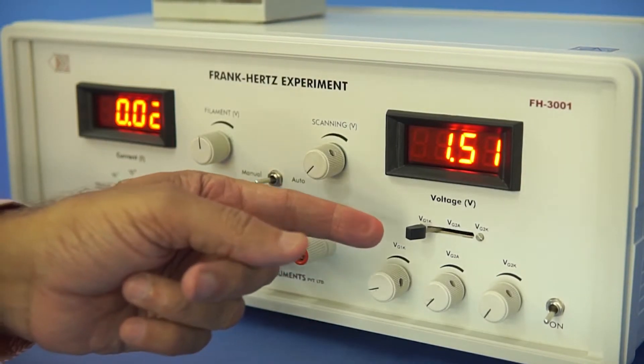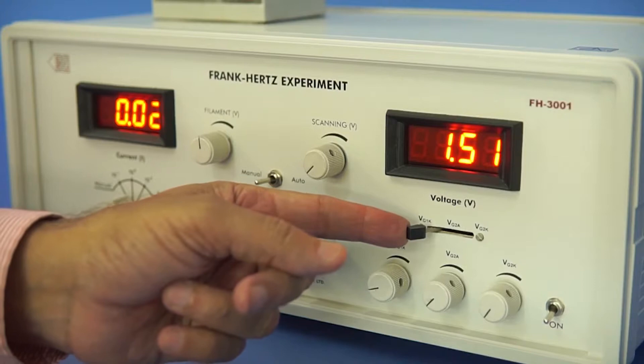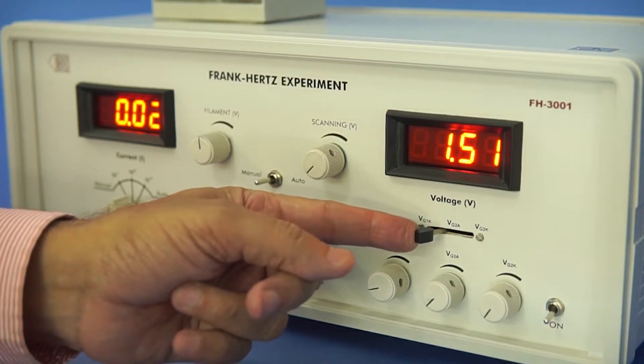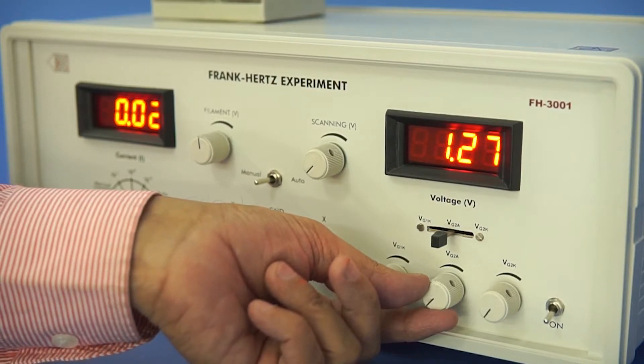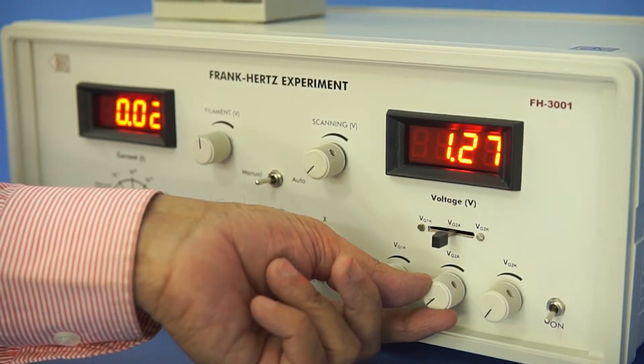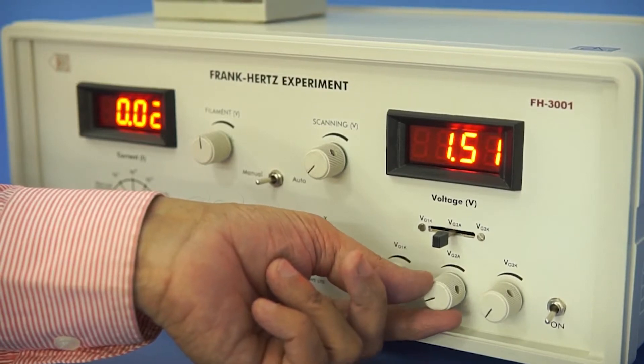Next, change the band switch position to VG2A. Now set the biasing voltage G2A at 7.5 volt.